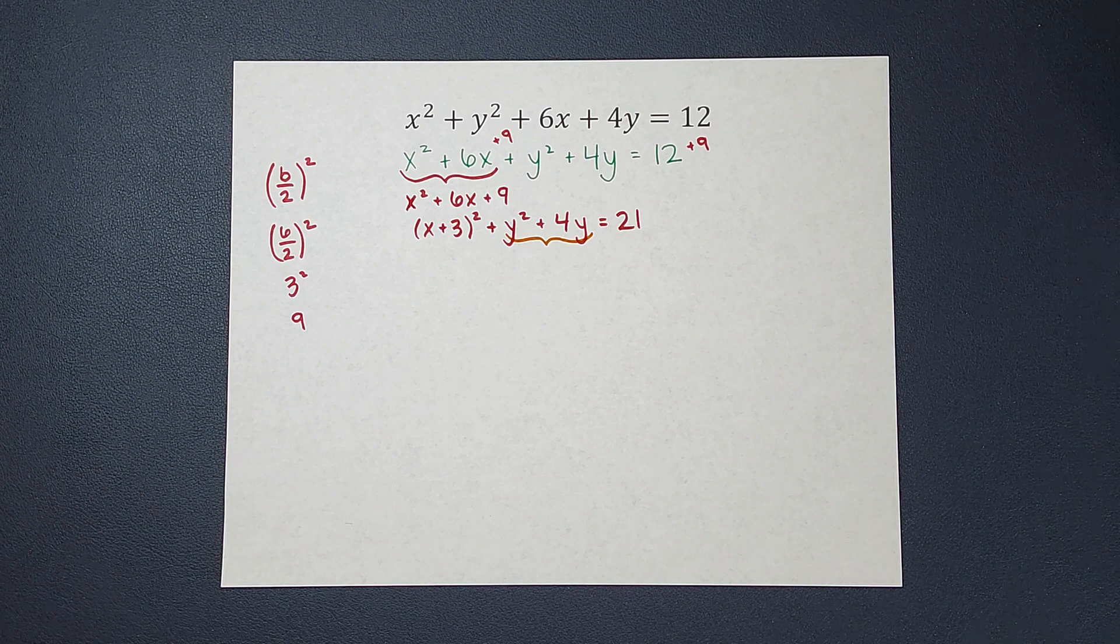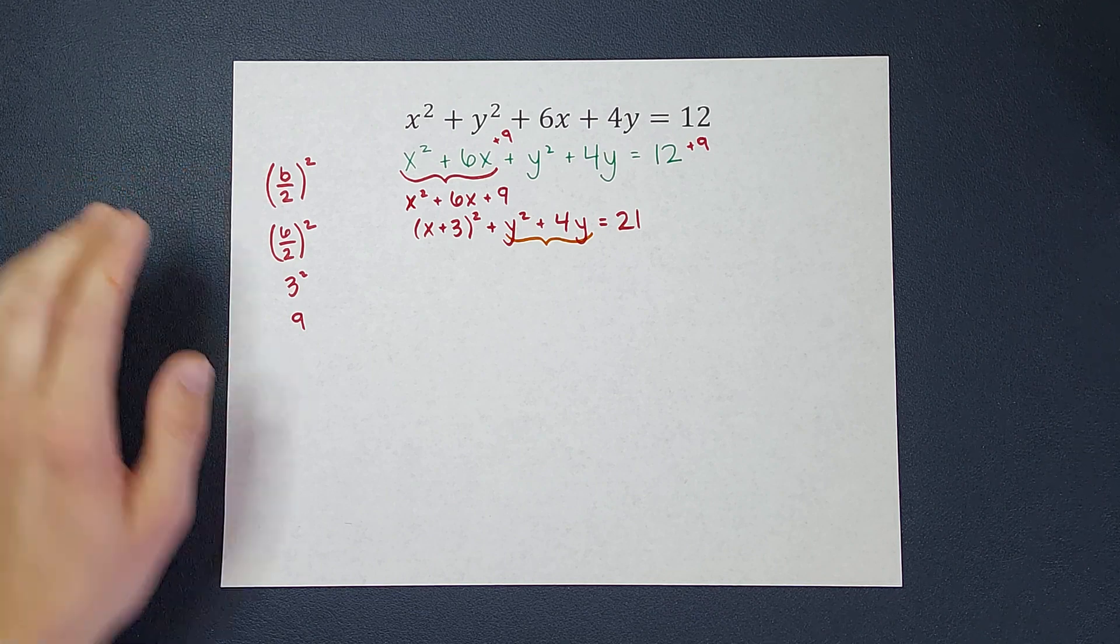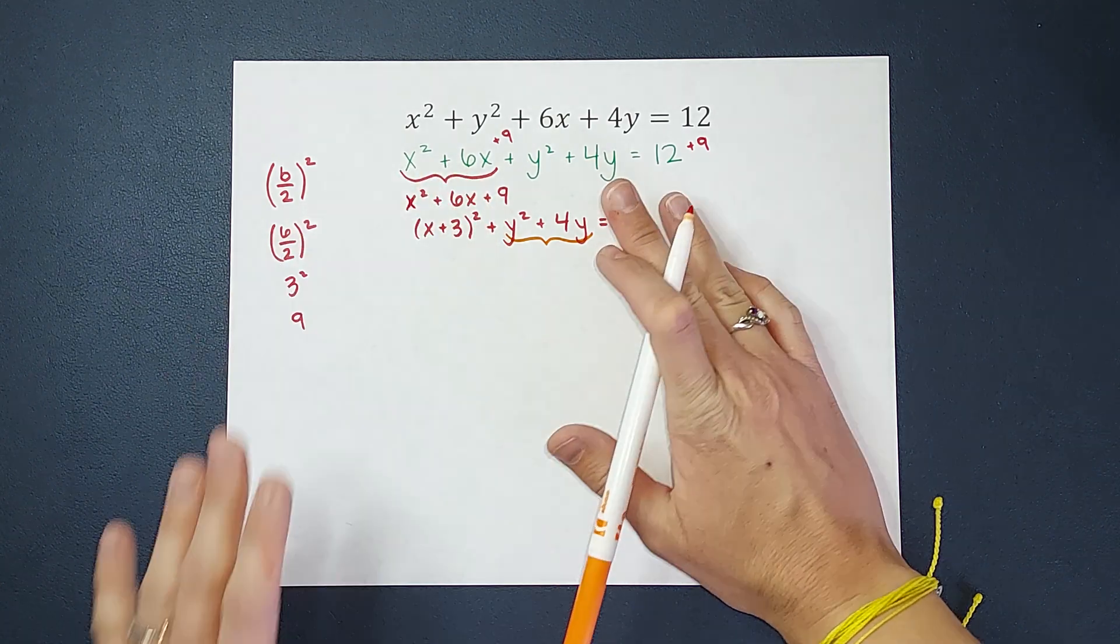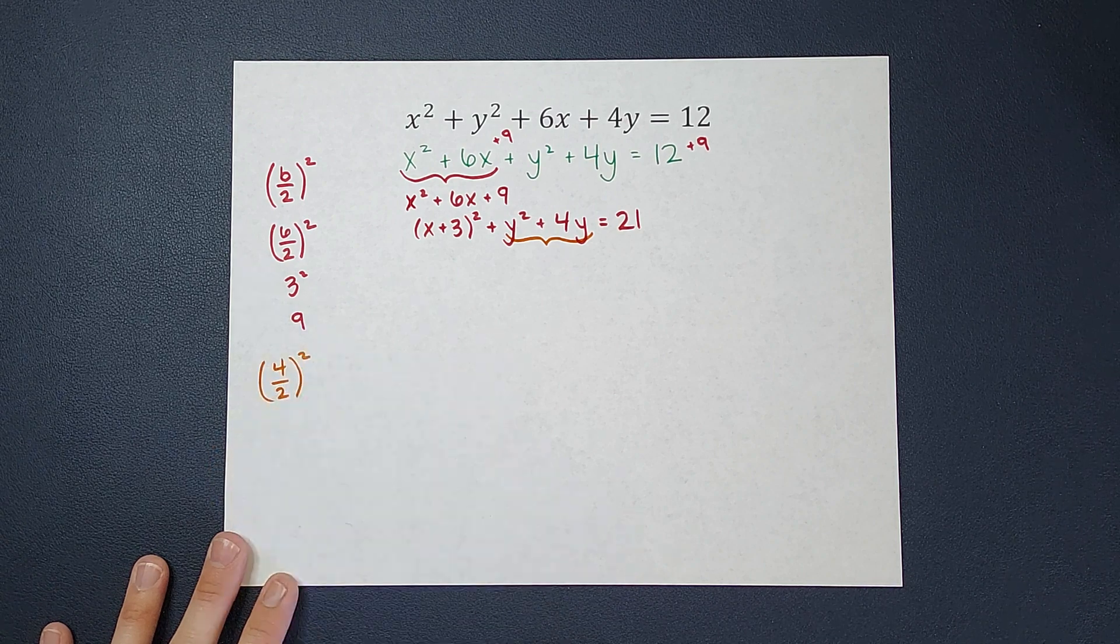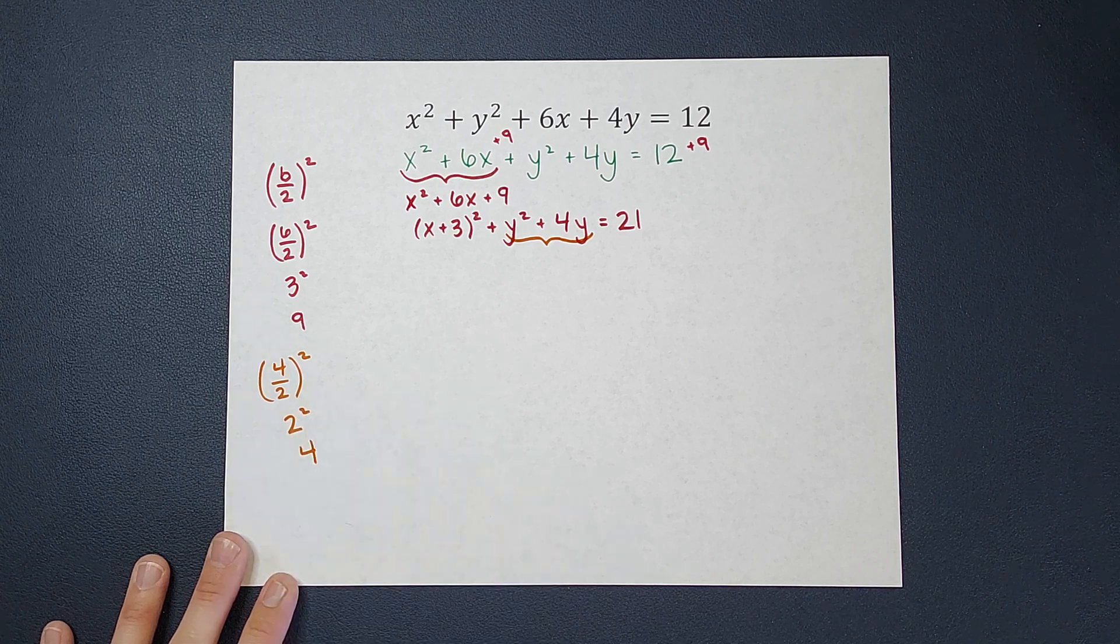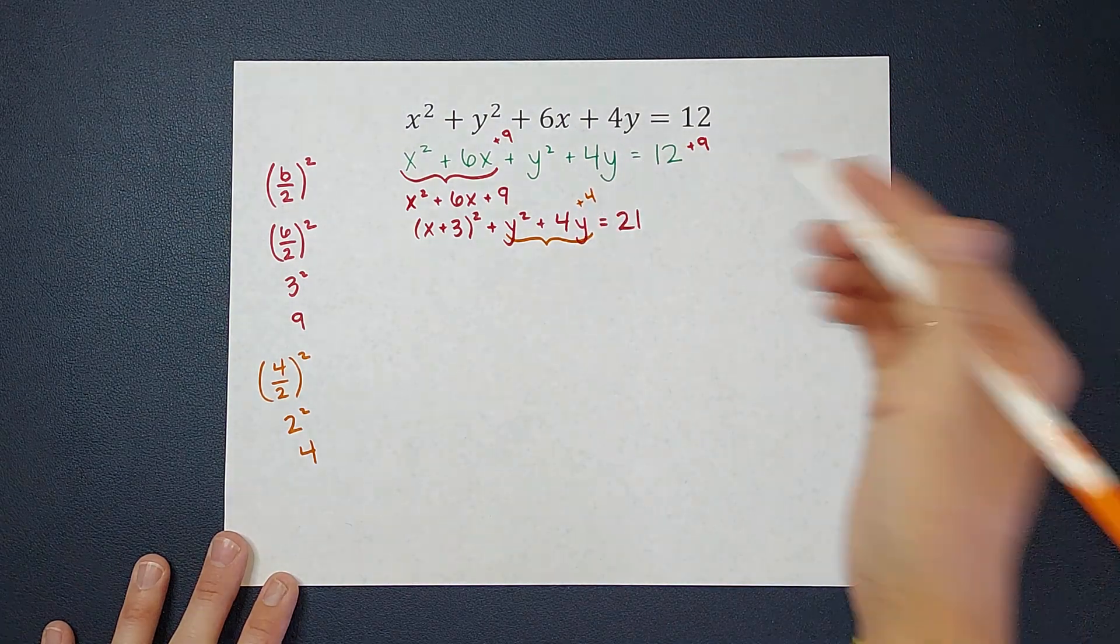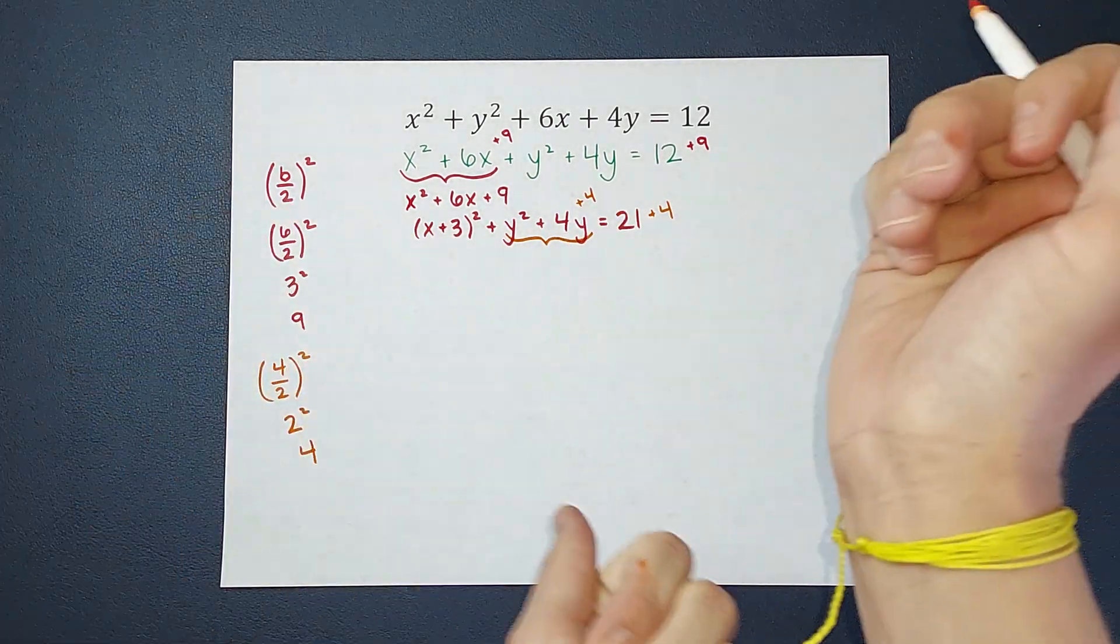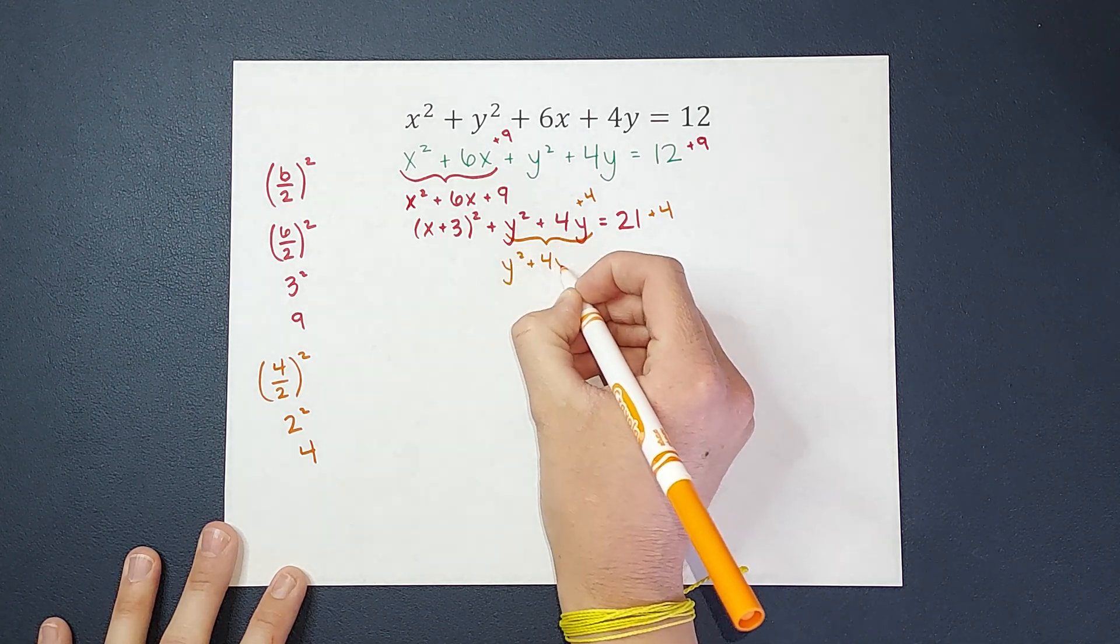So now we are going to complete the square with the y's. So again, I'm going to do b divided by 2 squared. In this case, my b is 4. So I'm going to take 4, divide it by 2, and square it. 4 divided by 2 gives me 2, and 2 squared is 4. So 4 is my magic number. I'm going to add to both sides, remember, to help this factor to something, a parenthesis squared. So I'm rewriting my y's, ignoring everything else for 2 seconds, but they're still there.